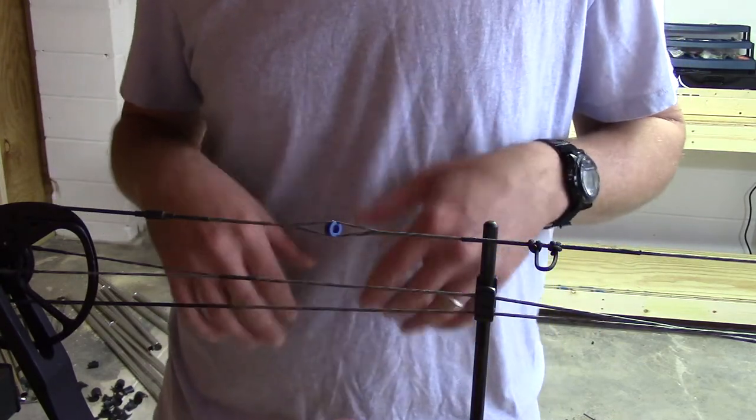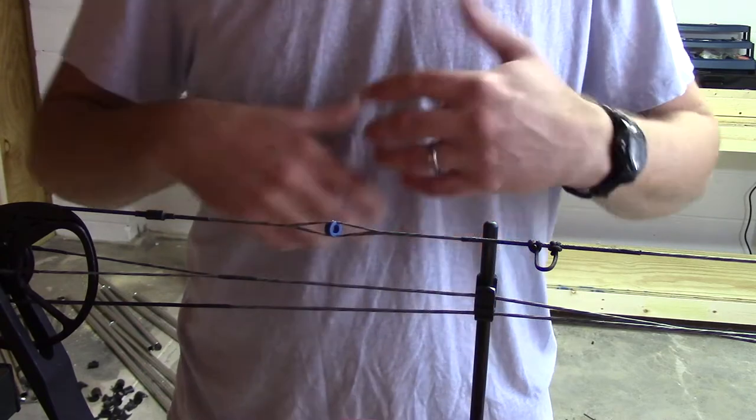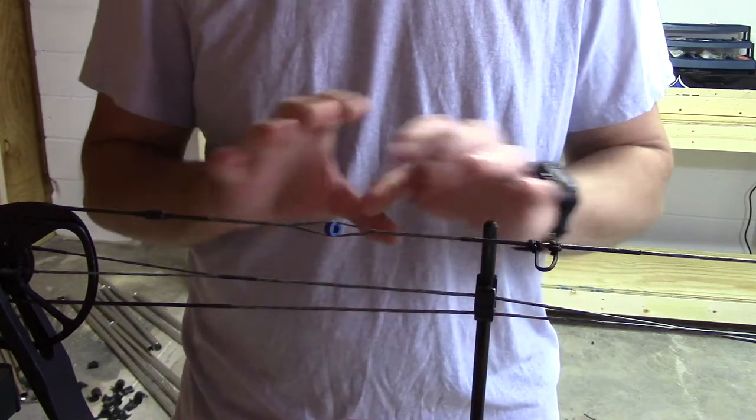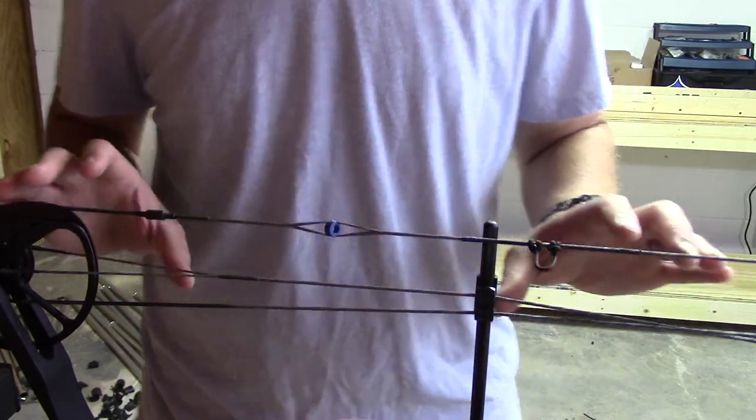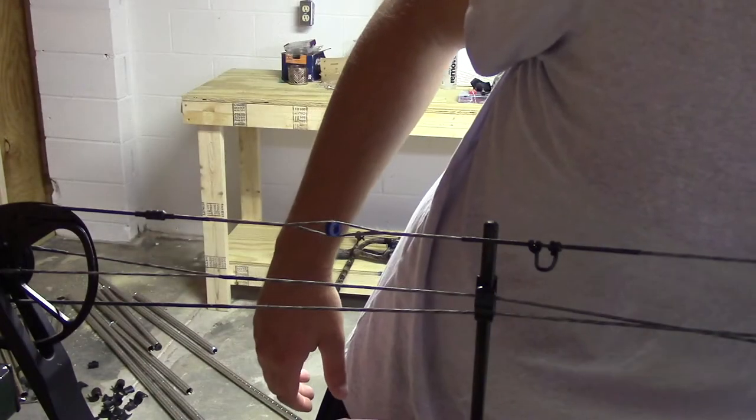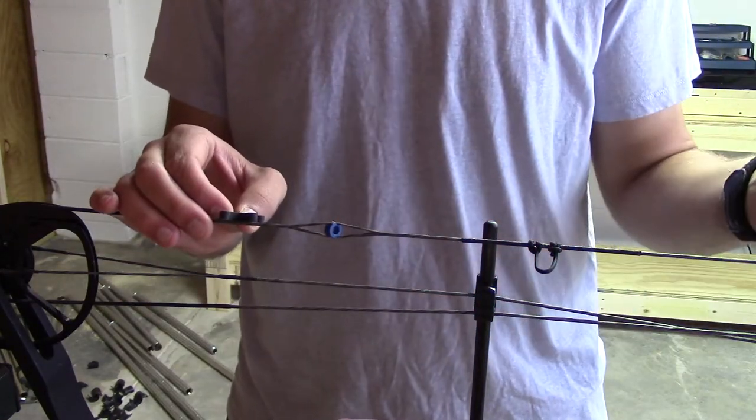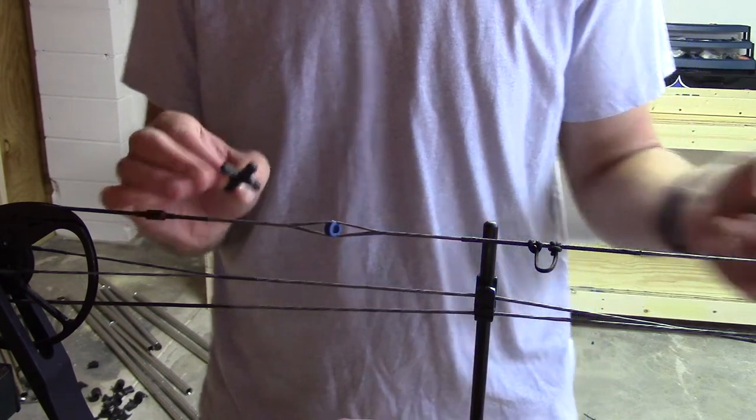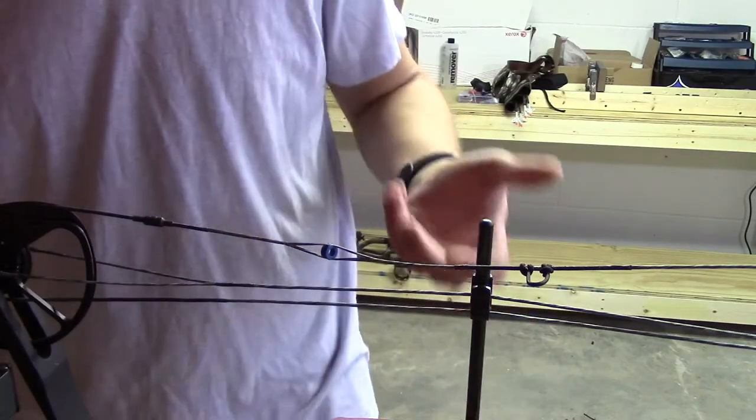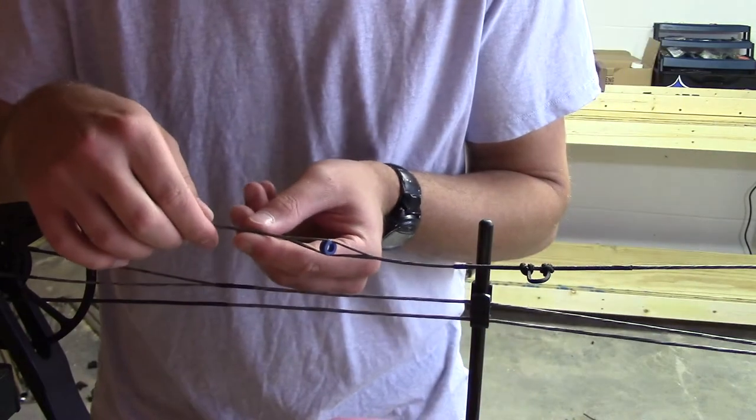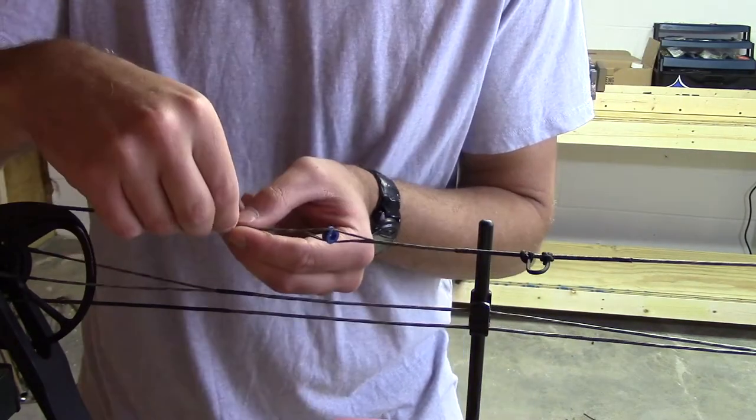So this is an important thing to note. Before you start timing and tuning, I like to put everything in the strings that I'm going to have in the strings. So I'm going to put in BoJack's string silencers, one here in the top above the peep, and one down here below the string stop. And this is why it's also very important to do what I did at the beginning of the video,